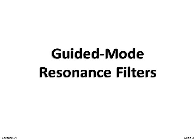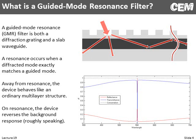Guided mode resonance filters. In a guided mode resonance filter, there are two things happening at the same time: diffraction and waveguiding. We have an incoming wave and it sees a grating, so it diffracts into multiple directions. We also have a high index region surrounded by two low index regions, so this is a slab waveguide.